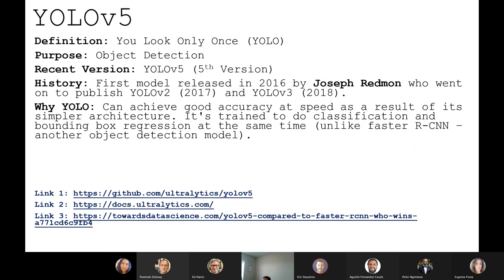The reason it can achieve good accuracies at a really quick pace is because it has a simple architecture — I think it's got 24 convolutional neural networks. It's trained to do classification and bounding box regression at the same time, which is what makes YOLO V5 quite up there. For example, in a driverless car application it can continually identify and classify people and lampposts as the car is moving, which makes it really good for videos. I've put some links down here for anyone wanting to dive deeper.